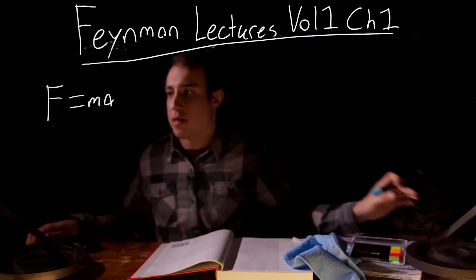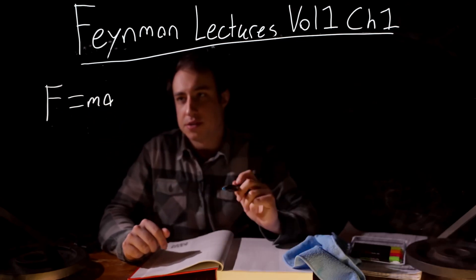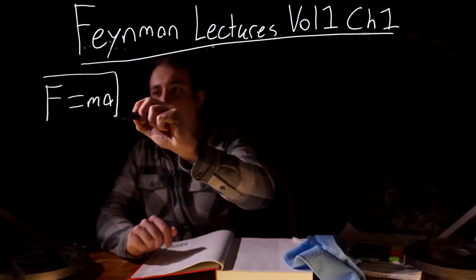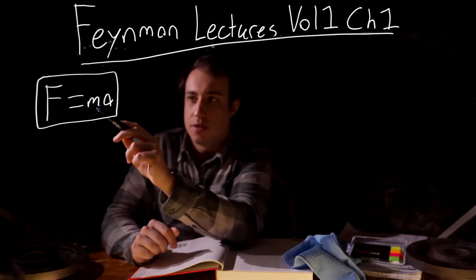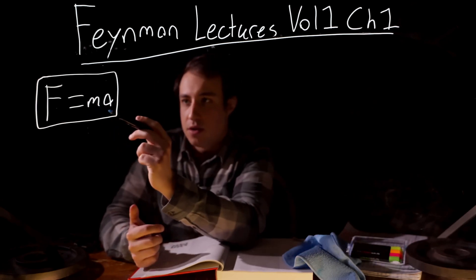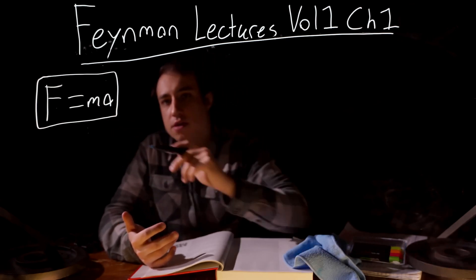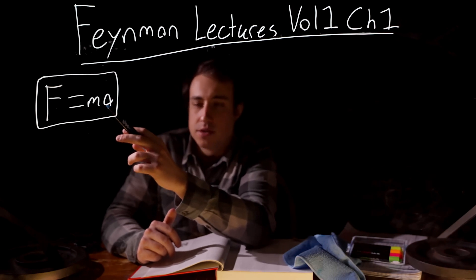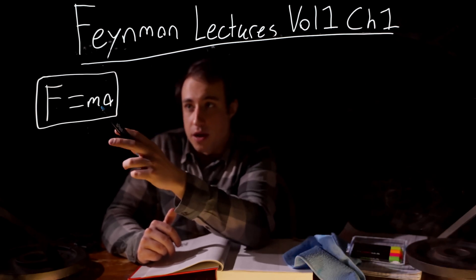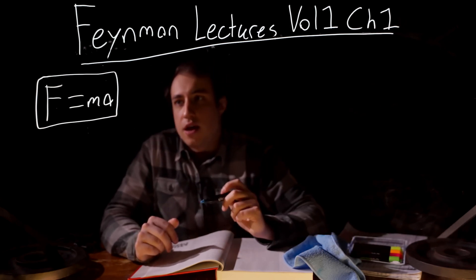F is equal to MA. This is force equals mass times acceleration. You've probably seen this equation before. In this equation, it's assumed that mass is constant. Acceleration can change, but whatever object you have, the mass of that object is going to be constant. And it turns out that that's not true. The mass of an object changes with its velocity. And for a long time this was assumed to be true, and we found out that it wasn't.